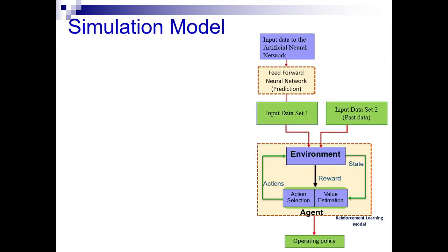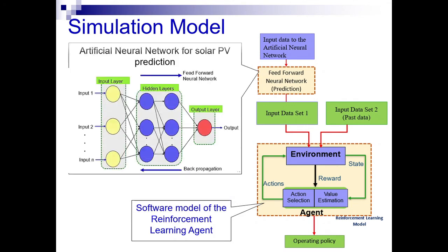This is the proposed simulation model for the RL agent. The software model of the reinforcement learning agent is implemented in Python. Past and predicted data based on artificial neural networks are fed to define the environment of the agent. Through this simulation model, optimum operating nature of the proposed microgrid can be extracted.